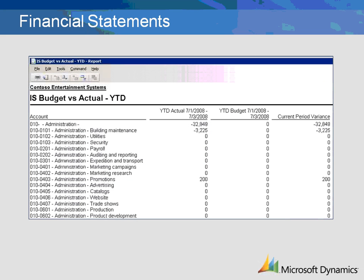As you can see, the financial statement is printed showing both departments and cost centers. The department is displayed first, with cost centers associated with it right below. The department shows the total balance of all the cost centers that are associated with it. Then each cost center is displayed.